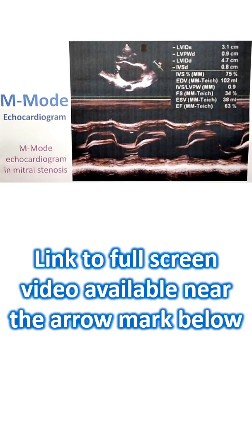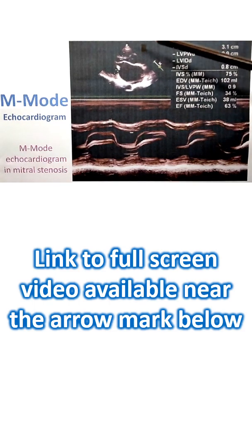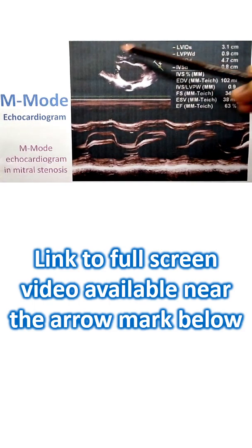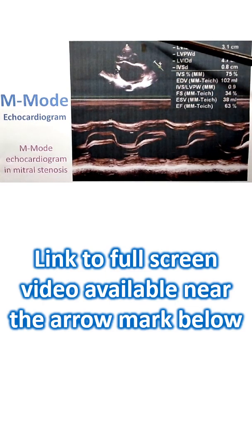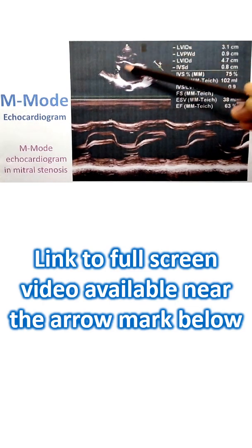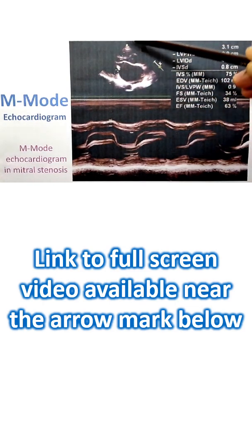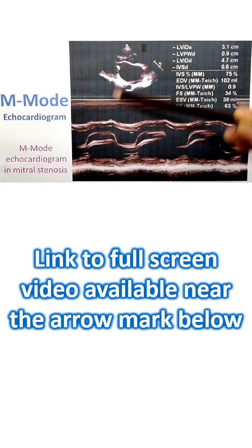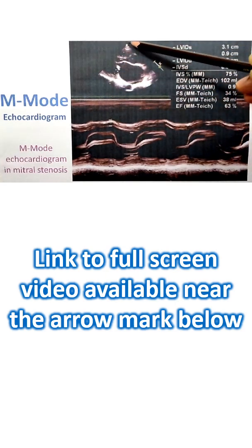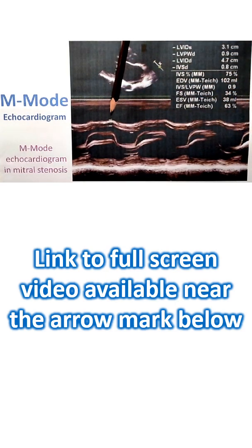Time motion because this is actually a single dimensional imaging. You can see this 2-dimensional image here and from that 2-dimensional image a cursor is placed here. This is the cursor placed in the 2-dimensional image, and it is like an ice pick view of the heart along a single dimension. The horizontal axis in this picture...